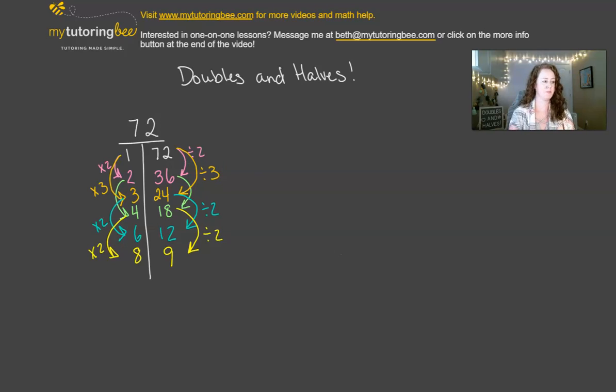Let's try another one. Let's factor 108. So again, we're going to start with 1 times 108. That's always going to be our baseline, our starting line. And then just like we did before, we can double one number, and we can have the other number.